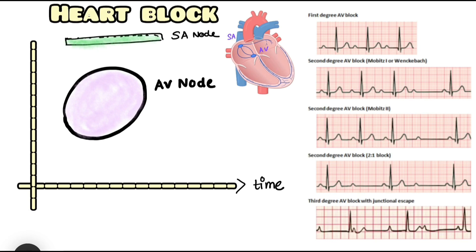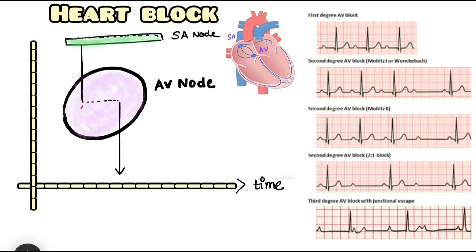Before that, let us understand the normal physiological function of the AV node. Whenever an electrical impulse comes down to the AV node from the SA node, the AV node causes a delay and then allows that impulse to get transmitted to the ventricle. This delay caused in the AV node is known as the nodal delay. This nodal delay is important because it gives a time difference between atrial depolarization and ventricular depolarization, so both the atria and ventricle don't depolarize at the same point in time. After atrial depolarization, the blood gets time to go into the ventricle before ventricular depolarization starts. That is the normal function of the AV node.